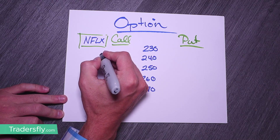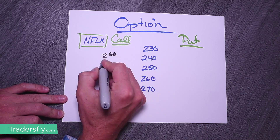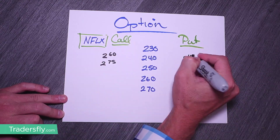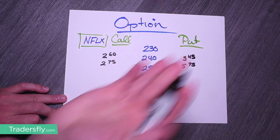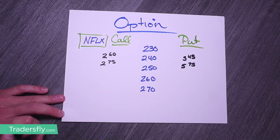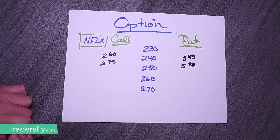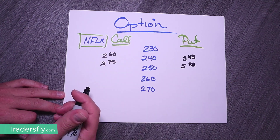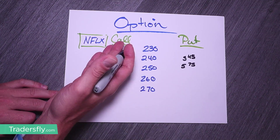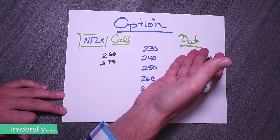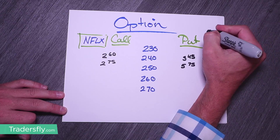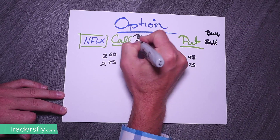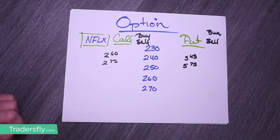Each call has a different price — one might have $2.60, this one $2.75, this could be $3.45, $5.75, whatever the case is, depending on where the stock is trading. What you need to look at is: first, are you interested in a call or a put? Second, are you thinking about buying the call or selling the call, or buying the put or selling the put? There are four different trades you could do — you could buy or sell a call, or buy or sell a put.